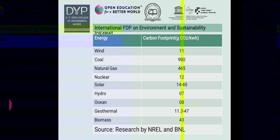Different energy sources and their carbon footprint in grams of CO2 per kWh: wind 11, coal 980, natural gas 465, nuclear 12, solar 14.45, hydro 7, ocean 8, geothermal 11.3247, and biomass 43. This data is taken from research by NREL and BNL.